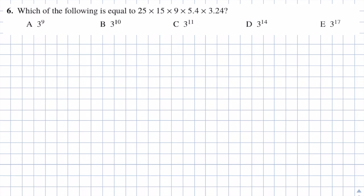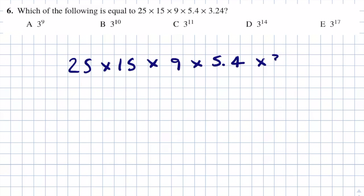Question 6: which of the following is equal to 25 times 15 times 9 times 5.4 times 3.24? Answers: A is 3 to the power 9; B is 3 to the power 10; C is 3 to the power 11; D is 3 to the power 14; and E is 3 to the power 17. I'm going to write this out and try to express each term in powers of 3, or another base where needed.